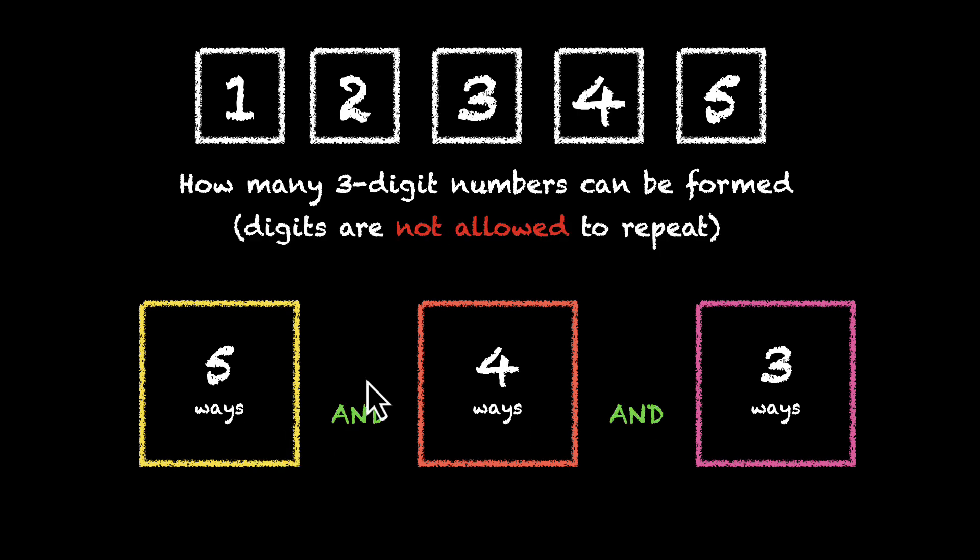And because we are filling the yellow box and the orange box and the pink box, the total number of ways will be 5 times 4 times 3. That's 20 times 3. That's 60 ways. So in total, we have 60 3-digit numbers where the digits are not allowed to repeat. And by the way, there's nothing special about the yellow box. We could have started with the orange box or the pink box. Whichever box we started with, we could have filled that box in 5 ways. Some other box would have been filled in 4 ways and the last remaining box would have been filled in 3 ways.